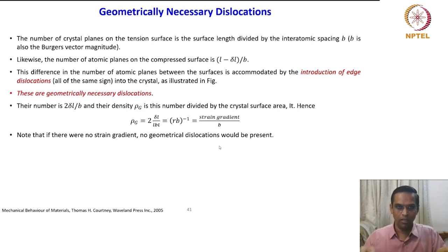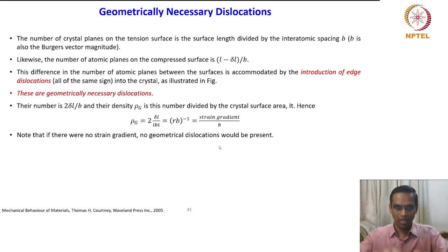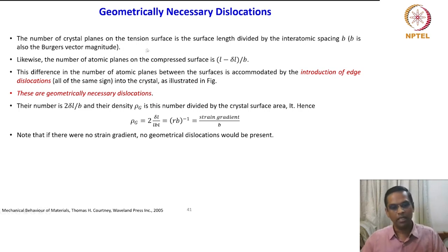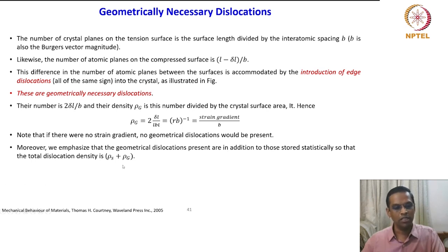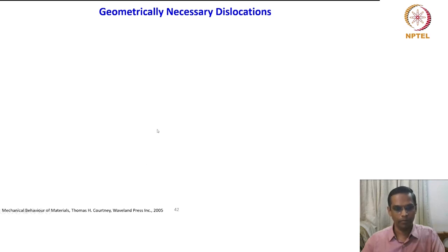By doing that, we had to introduce additional dislocations to accommodate this plastic bending deformation. We emphasize that geometrical dislocations are present in addition to those stored statistically, so that the total dislocation density is rho_s plus rho_g.